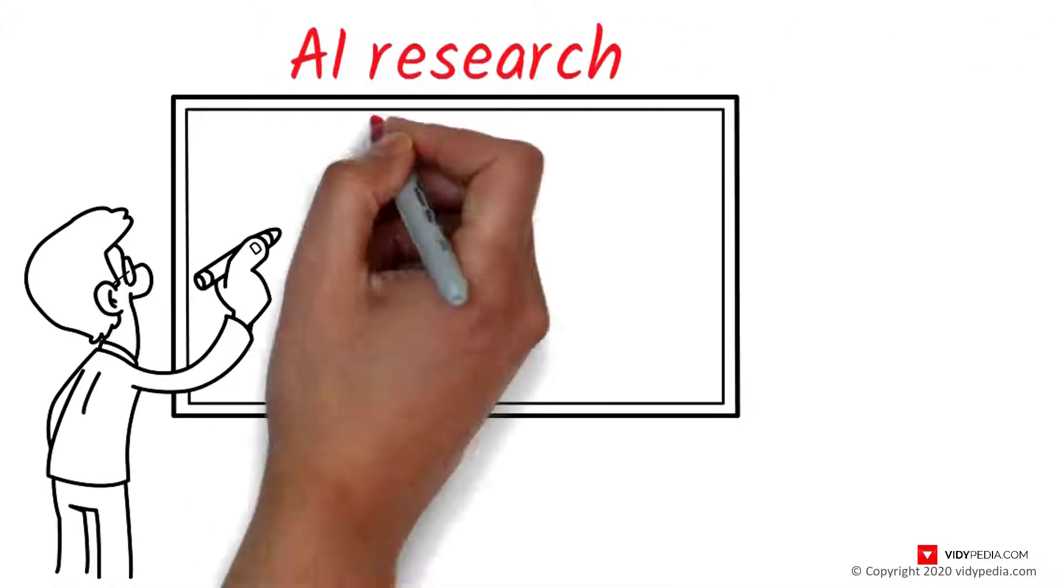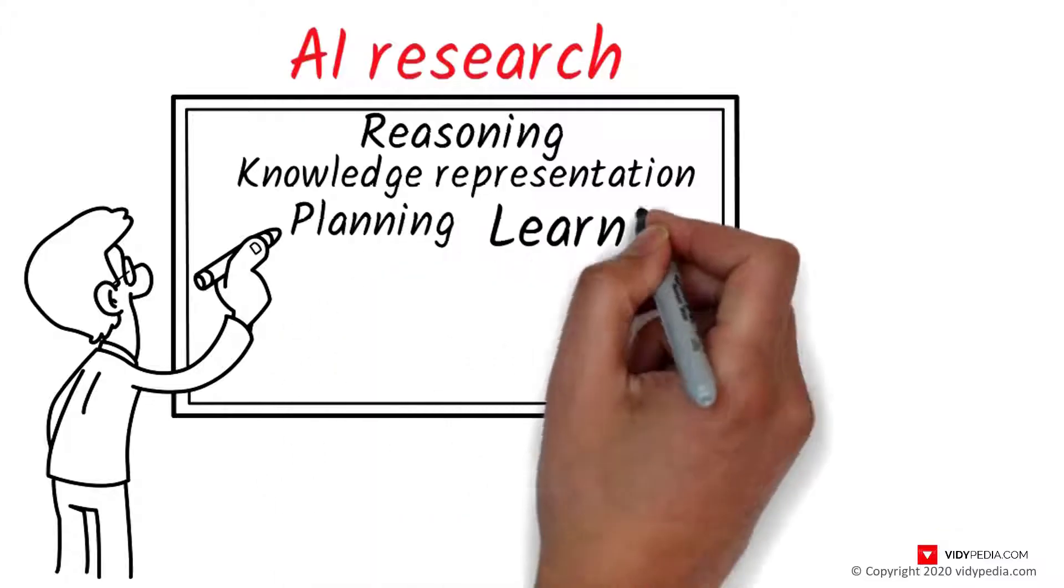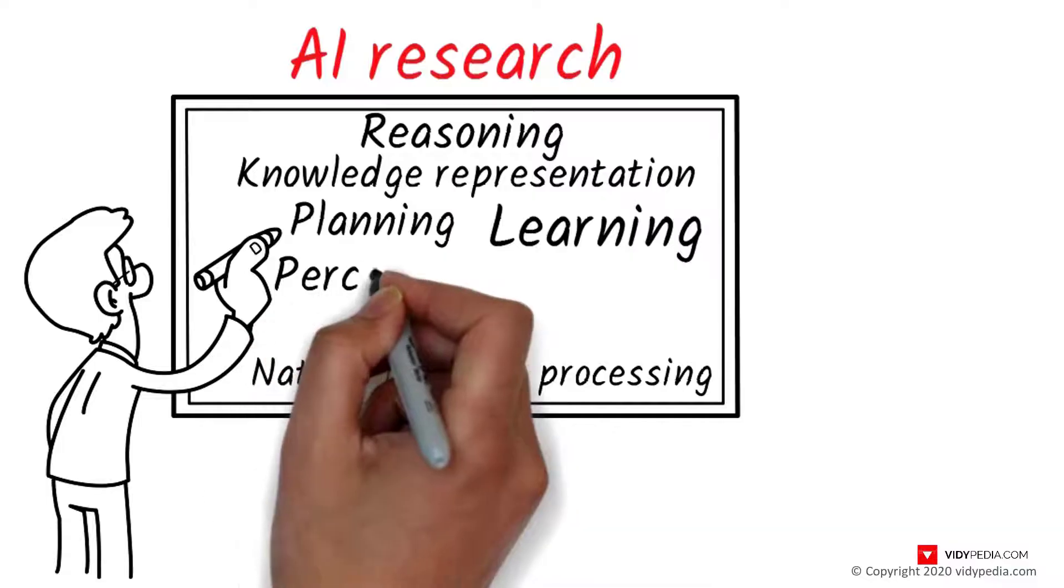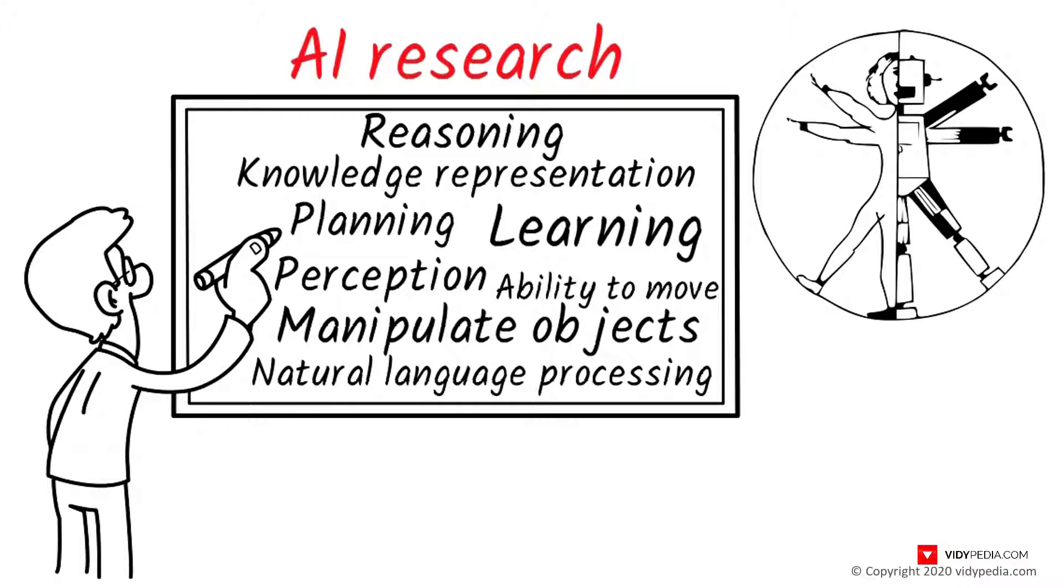The traditional problems or goals of AI research include reasoning, knowledge representation, planning, learning, natural language processing, perception, and the ability to move and manipulate objects. General intelligence is among the field's long-term goals.